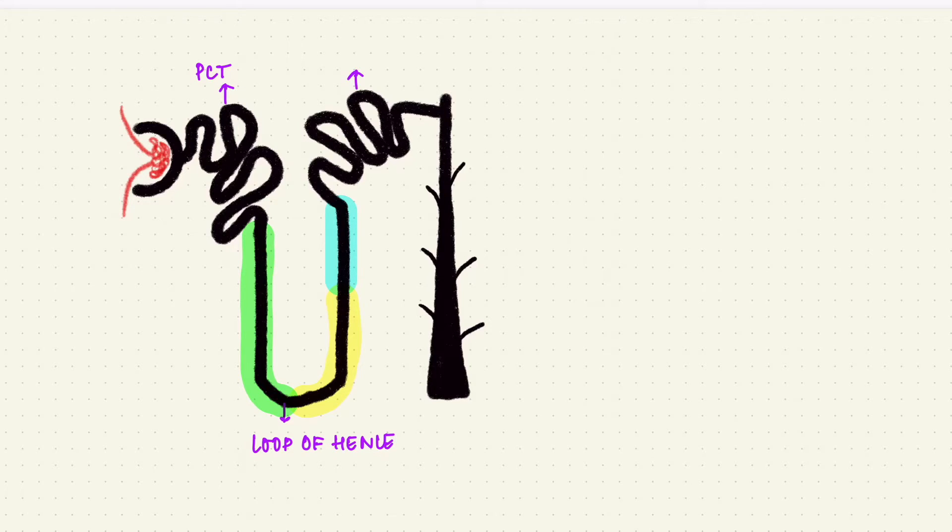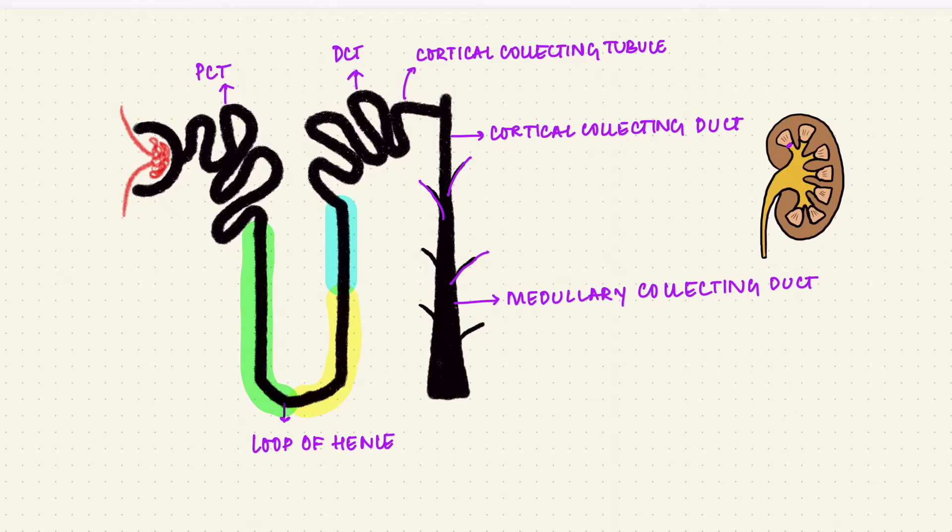Followed by the distal convoluted tubule and then the cortical collecting tubule which leads into the cortical collecting duct. Collecting ducts from multiple nephrons fuse together so it gets larger until it forms the medullary collecting duct which eventually empties at the renal papillae into the renal pelvis.